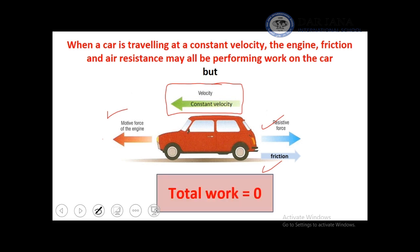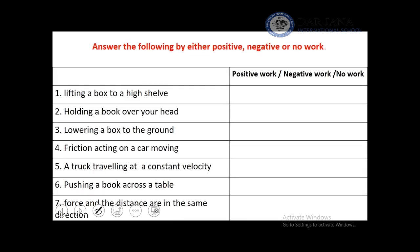So the total work will be zero in this case when you have constant velocity. Here are some examples of work. Let's try to classify them: positive, negative, or no work.